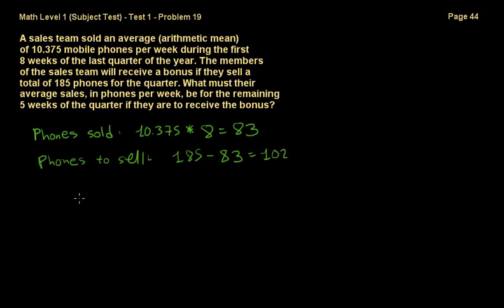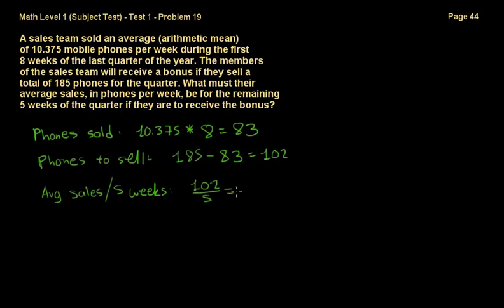They need to sell 102 phones in the 5 remaining weeks. The average sales for those 5 weeks is 102 divided by 5, which gives us the average number of phones per week — and that is 20.4. That is the answer we're looking for, so the correct answer is B.